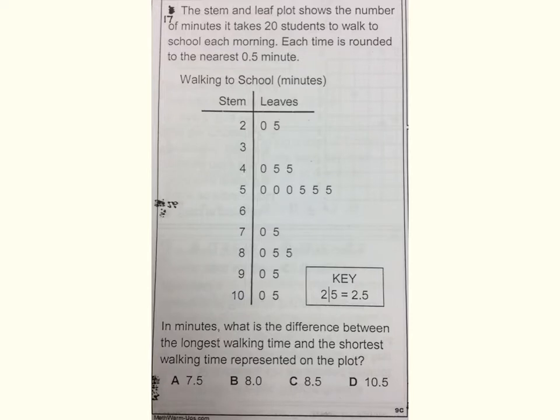Number seventeen. The stem and leaf plot shows the number of minutes it takes twenty students to walk to school each morning. Each time is rounded to the nearest five-tenths minute. Walking to school in minutes is my title. The stem is a whole number, the leaves are tenths. In minutes, what is the difference between the longest walking time and the shortest walking time represented on the plot?